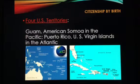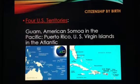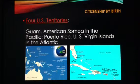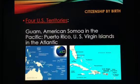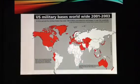Also, birth on one of our four territories grants citizenship. We have two in the Pacific Ocean — Guam and American Samoa — and in the Atlantic Ocean we have Puerto Rico and the U.S. Virgin Islands. People who are born there are U.S. citizens. You may remember when North Korea threatened to attack Guam — that brought a very stern response from President Trump. Those people living in Guam, if born there, are U.S. citizens because it's American territory.